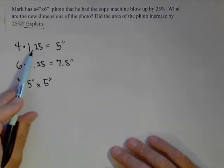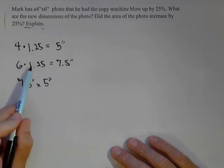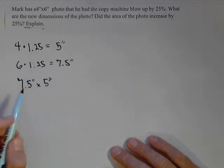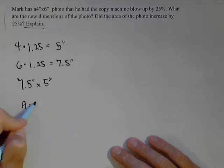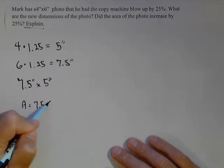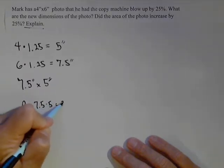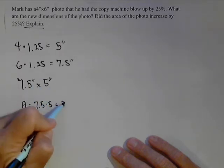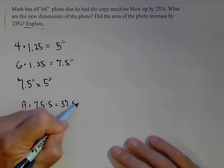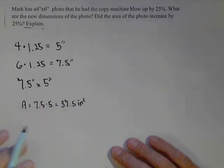And it still maintains that same ratio because we scaled both sides by the same factor. Now, the area is going to be equal to 7.5 times 5, or 37.5 square inches.